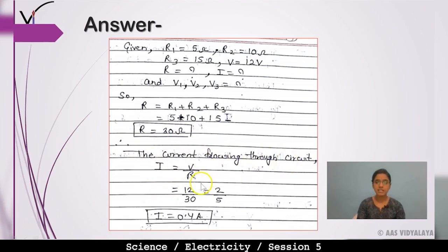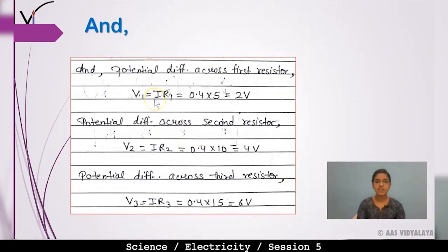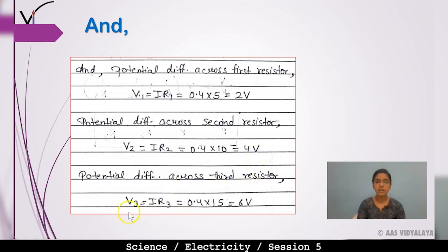The current flowing through the circuit: I = V/R = 12/30 = 0.4 ampere. Now finding potential differences: V1 = IR1 = 0.4 × 5 = 2V; V2 = IR2 = 0.4 × 10 = 4V; V3 = IR3 = 0.4 × 15 = 6V.